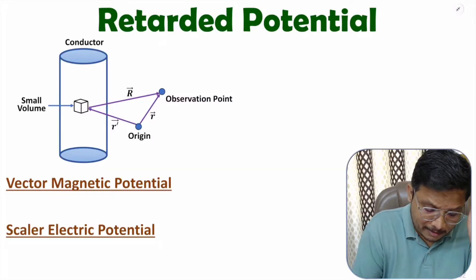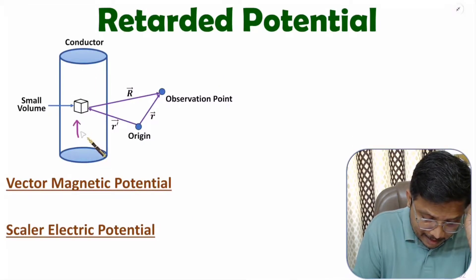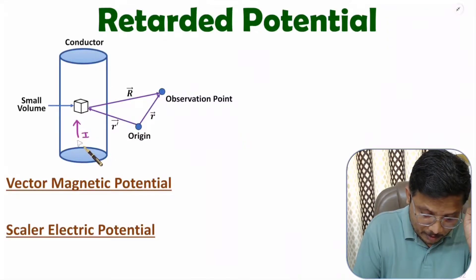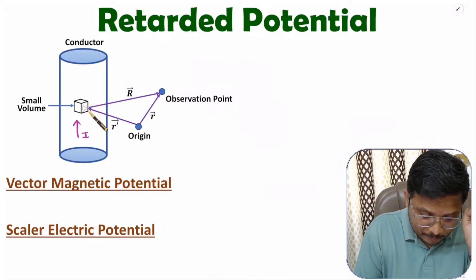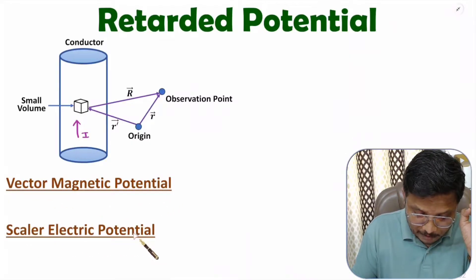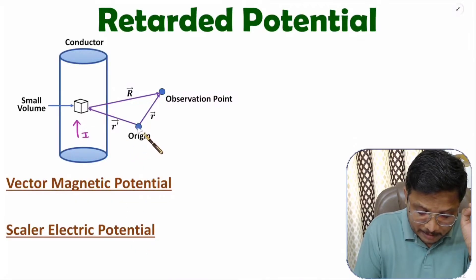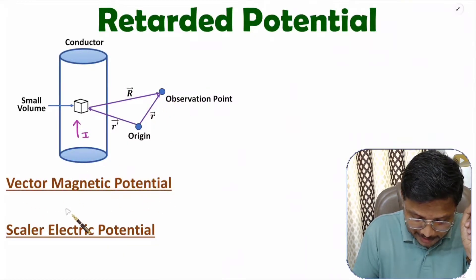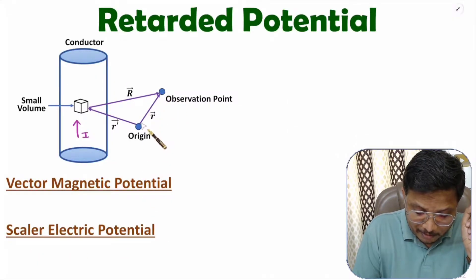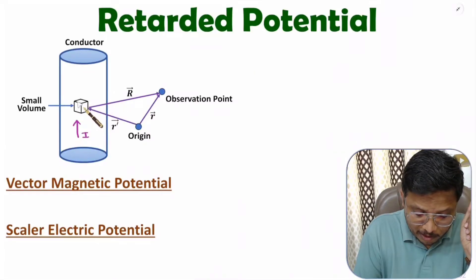To understand that, you need to understand this diagram first. Here we have a conductor, and let us assume current I is flowing through this conductor. To calculate vector magnetic potential and scalar electric potential, I will be considering a small volume here. Because of this small volume, we will be calculating these potentials. For that calculation, here we have the origin. With respect to the origin, this small volume is at vector r-dash. Here we have an observation point where we will be calculating vector magnetic potential and scalar electric potential, separated by vector small r. This observation point is at capital vector R with respect to the small volume.